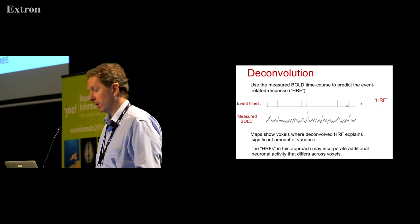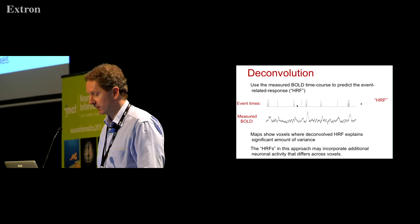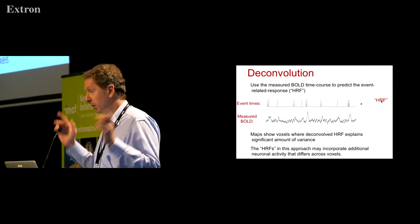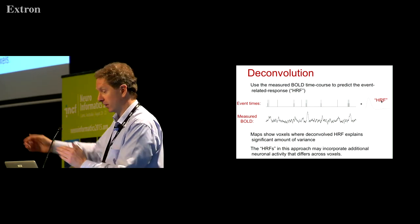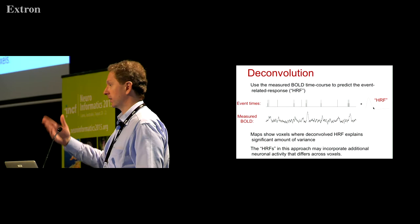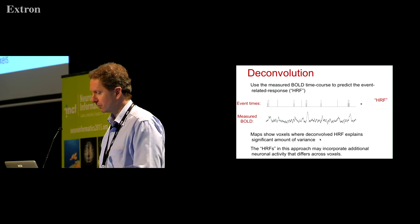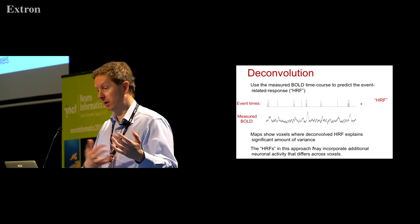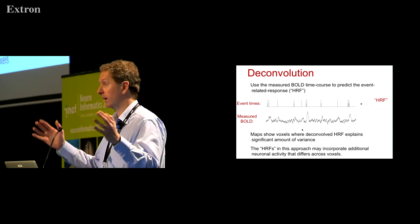So in these situations you need to use deconvolution — basically invert the normal equation. We've got event timings that we know. Typically you'd convolve these with an HRF and look for that in the measured BOLD signal. Instead, we take the measured BOLD signal at those event times, invert this equation, and work out what the effective hemodynamic response function is — really the HRF convolved with some neuronal response train that's not just a delta function. We then get a map and can look at this with an F-test. This deconvolution uses a finite impulse response or Fourier basis set as a flexible basis set in the GLM.